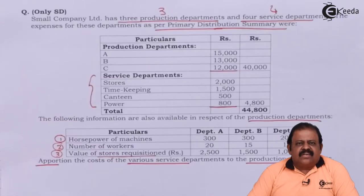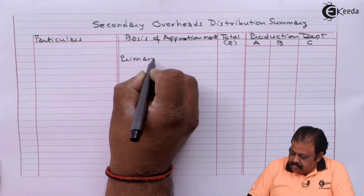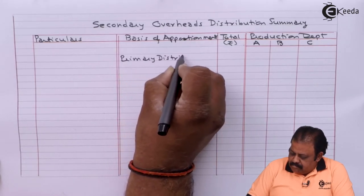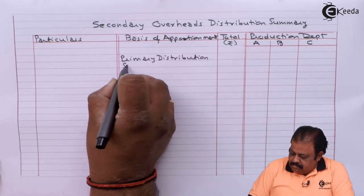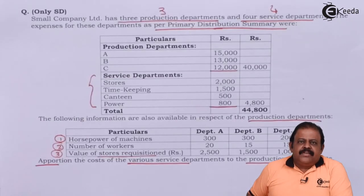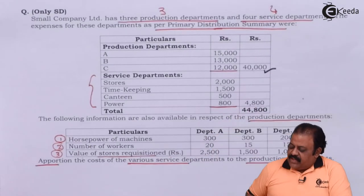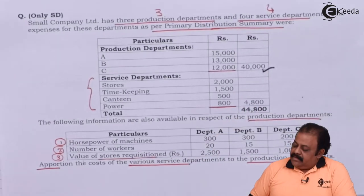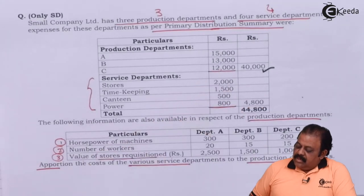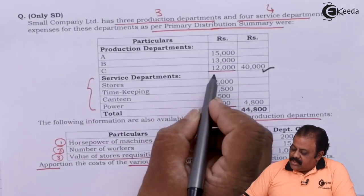We first need to consider the distribution base for each service department. Based on primary distribution, the totals are: total 40,000, department A 15,000, department B 13,000, department C 12,000.